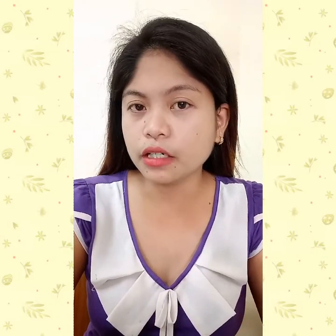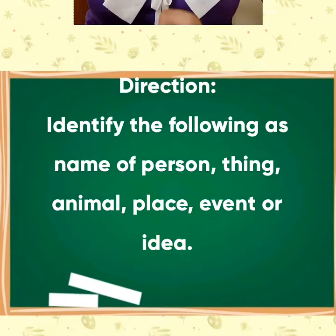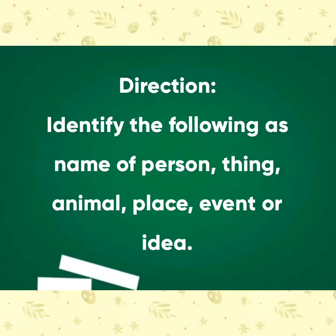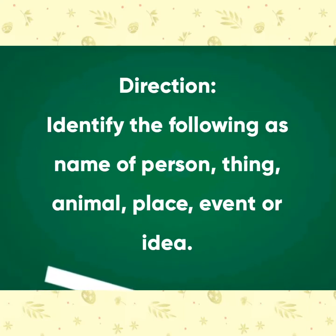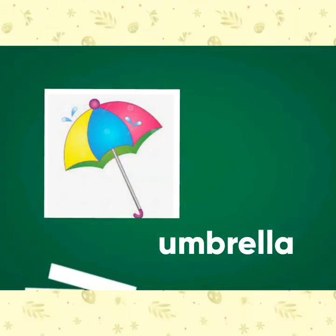I have prepared activities for you to answer. All you need to do is write whether the word or picture is a name of a person, place, event, animal, thing, or idea. Direction: Identify the following as the name of a person, thing, animal, place, event, or idea. First item: umbrella.